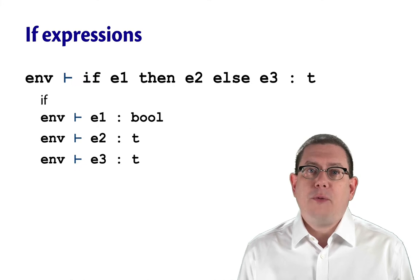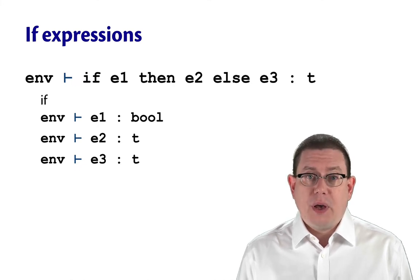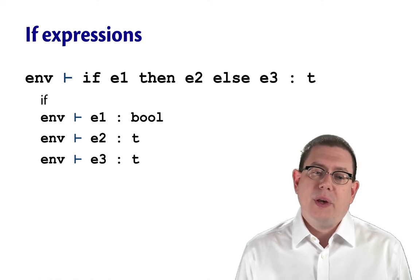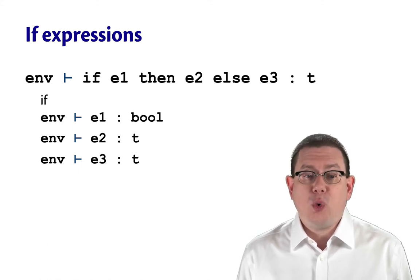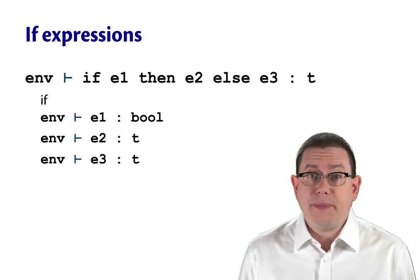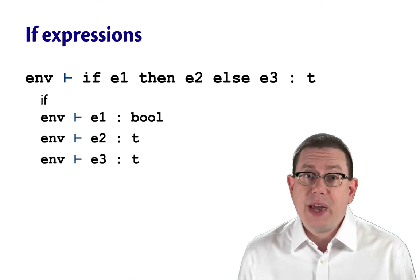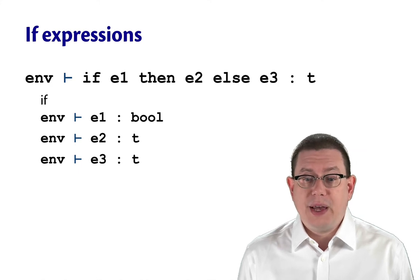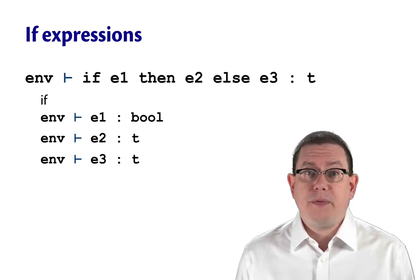For an if-expression, we need to check three preconditions here, three premises of this rule. We need to check that e1 has type bool, e2 has type t for whatever that type t might be, and that e3 has that same type t. So the entire if-expression then has type t because that's the type of the branches.